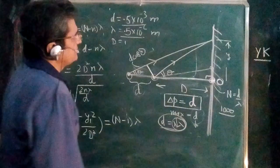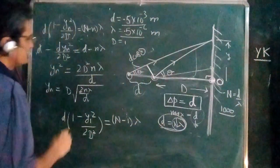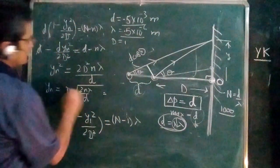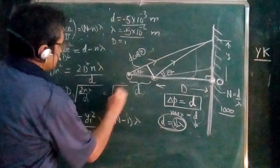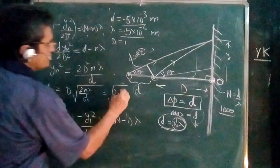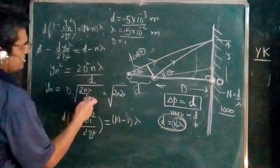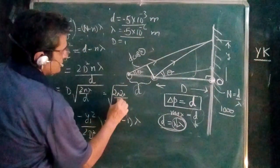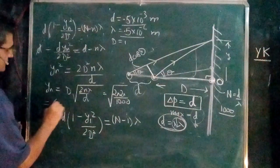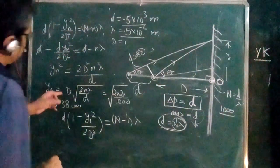In the DC Pandey problem we need the second bright fringe, so n = 2. With D = 1 m and D/λ = 1000: y₂ = 1 × √(2 × 2 / 1000) ≈ 6.38 cm.